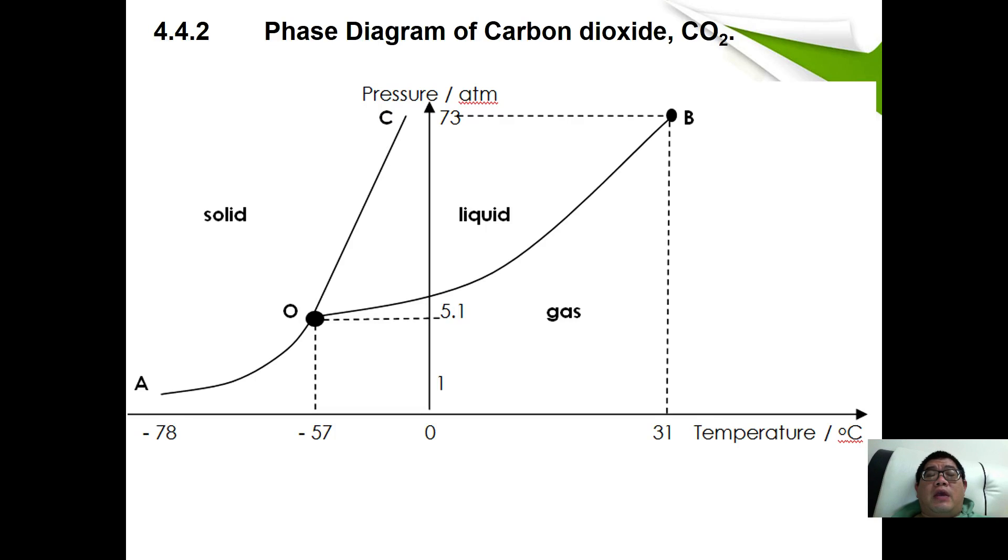Whereas here, we have the phase diagram of carbon dioxide. Unlike water, the melting curve now is showing a positive gradient. This is still the sublimation curve and this is still the vaporization curve. Everything beyond here is solid, here is liquid, and here is gas. For carbon dioxide, the triple point exists at negative 57 degrees Celsius and 5.1 atmospheres, whereas the critical point exists at 31 degrees Celsius and 73 atmospheres.